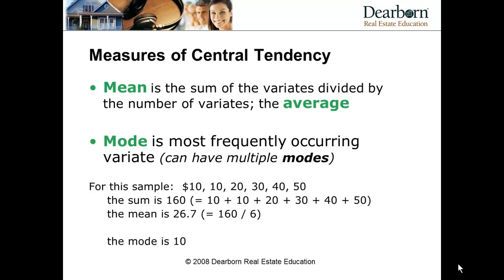Depending on your sample, you could have multiple modes — multiple results appearing the same number of times. In a simple example with a sample of $10, $10, $20, $30, $40, and $50, you can see it's fairly dispersed. The aggregate — adding each number — is $160. The mean is $160 divided by 6 samples, which equals $26.7. The mode is $10, since it appears twice.